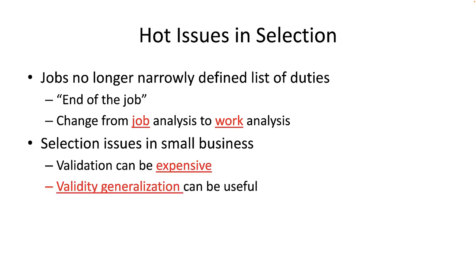Another hot issue in selection regards small businesses. Many small businesses cannot afford to conduct job analysis, develop and validate selection tests, and scientifically perform performance evaluations. Validation takes expertise, and experts cost money, so it can be expensive for small firms to conduct their own validation studies. But there is a solution: they can use something called validity generalization, which relies on the statistics of a meta-analysis. A meta-analysis scientifically synthesizes dozens and sometimes hundreds of similar studies on similar tests and provides the so-called true score correlation between a particular selection test and job performance.